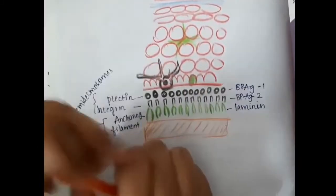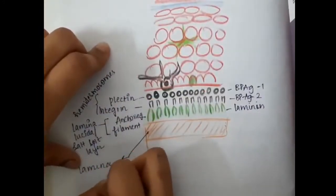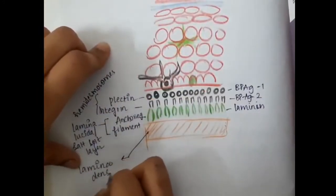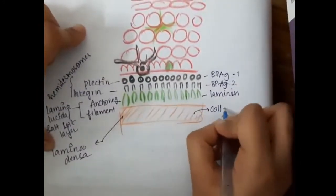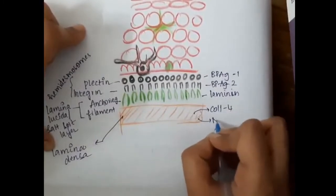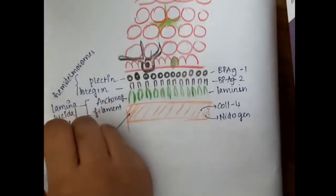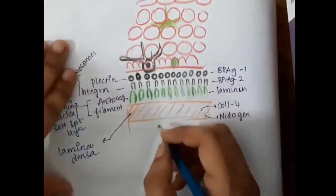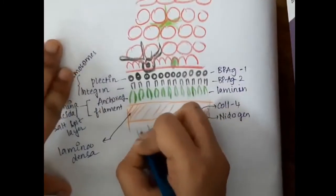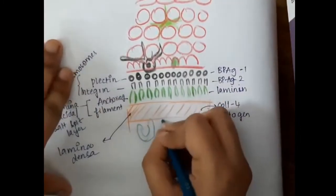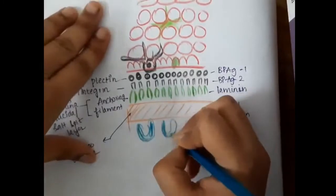Below the lamina lucida or salt split layer, we have the lamina densa. The lamina densa includes collagen 4 and nidogen.